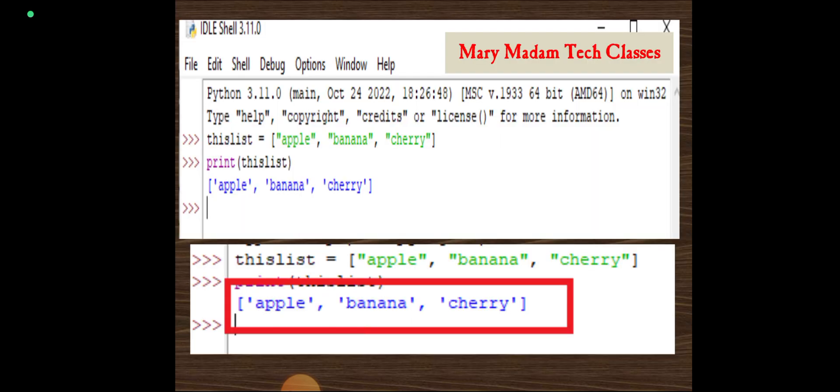This is a window of Python. If you install the Python software, the window will appear like this. The version of my Python is 3.11, IDLE shell 3.11 version. If you observe, three greater than symbols are here. I am typing this list equals to, now we discuss the example.